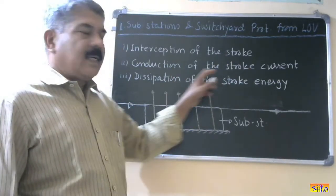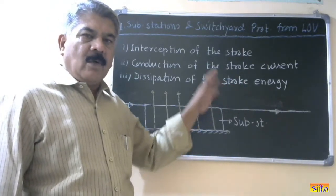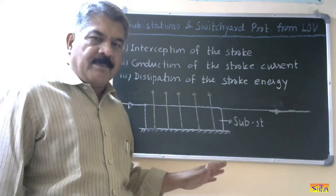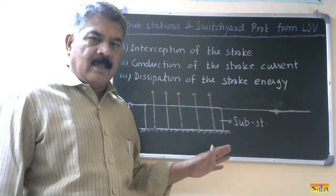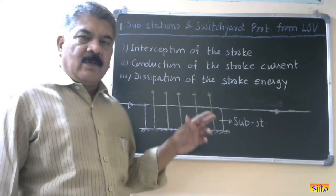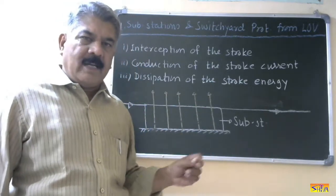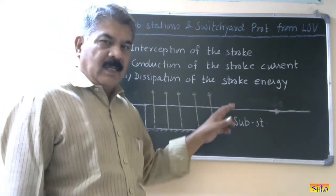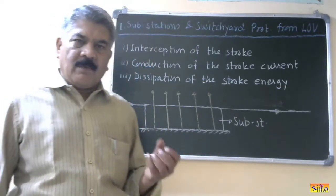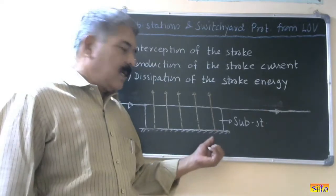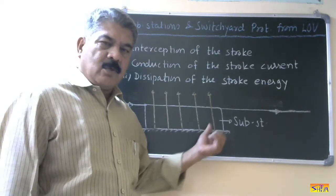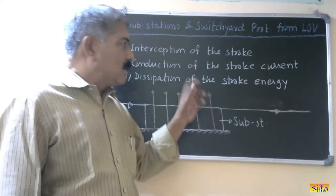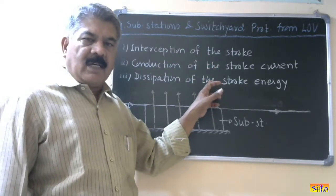The second step is conduction of the stroke current. Whatever discharge current flows must flow through that object only and not through any other object. Therefore, these metallic objects or electrostatic shielding must have minimum resistance so that the stroke current prefers this path only. The third step is dissipation of the stroke energy. Since this current is very high, we require resistance to dissipate that energy so that nothing unwanted happens.